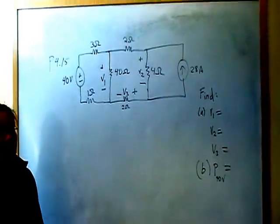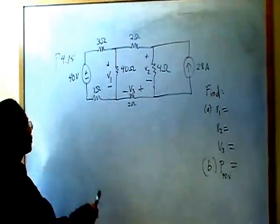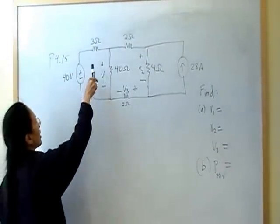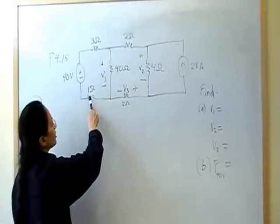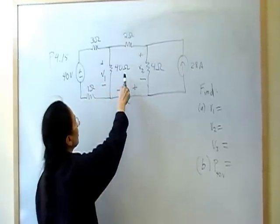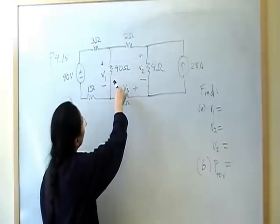This is problem number 15 from chapter 4 on node voltage circuit analysis. We have a 40-volt independent voltage source here, and it's in series with a 3-ohm resistor and a 1-ohm resistor, and that is parallel connected to 40-ohm, which drops a V1, some voltage V1.